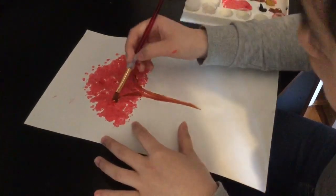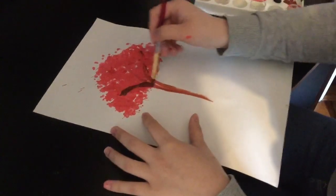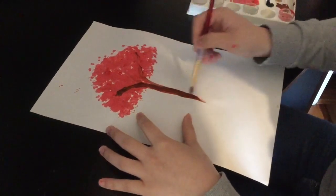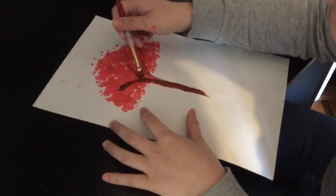If you want to make your branches darker or a different color, maybe black or more brown, you could go ahead and add more paint if you need.